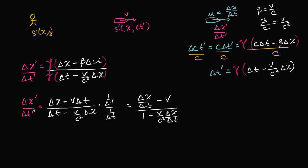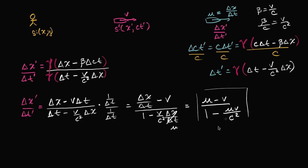So we've figured out the velocity in the primed coordinate system — the S prime frame of reference — in terms of the relative velocity v between the frames and u, the velocity in my frame of reference. Since delta x over delta t equals u, we can write this as: u prime equals (u minus v) over (one minus u times v over c squared). This is the relativistic velocity addition formula — a really, really useful derivation, which we'll apply numbers to in the next video to appreciate how interesting it is.